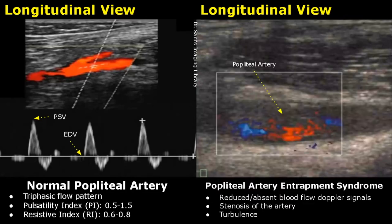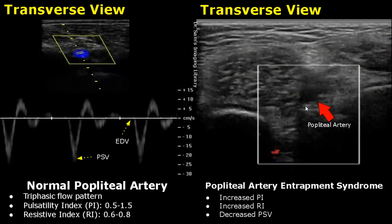Popliteal artery entrapment syndrome usually occurs in athletes who have hypertrophic leg muscles. In this condition, reduced or absent blood flow is seen in the vessel, stenosis of the artery is also seen, and we will also find turbulence. Here is a transverse view of the popliteal artery — we do not find any Doppler signals. We will also find increased pulsatility index, increased resistive index, and decreased peak systolic velocity.